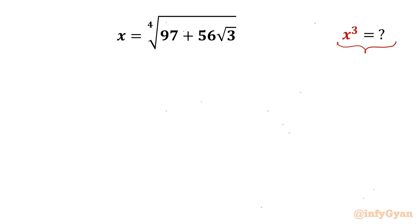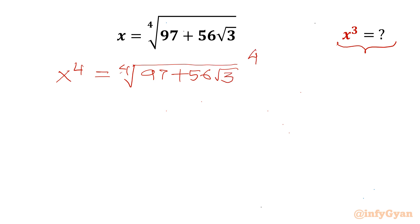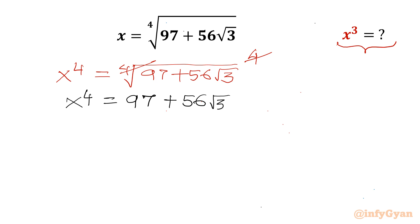Let's get started by raising both sides to the power 4. So the 4th root of (97 plus 56 root 3) to the power 4 — we can cancel the 4th root with power 4. So x power 4 will be 97 plus 56 root 3. Since this radicand is a positive number, x must be greater than 0.